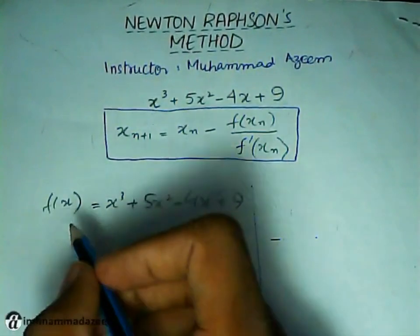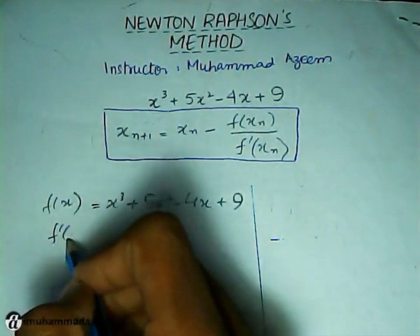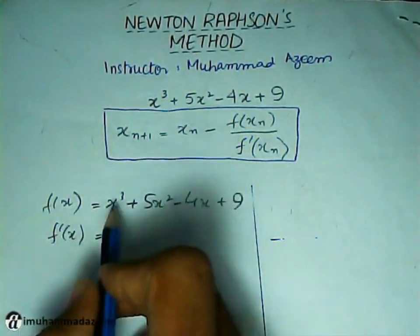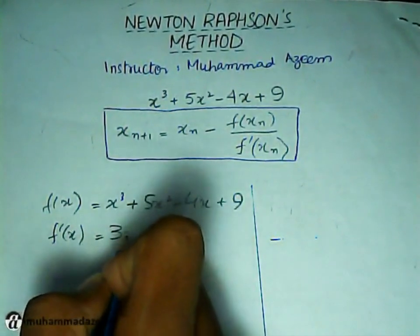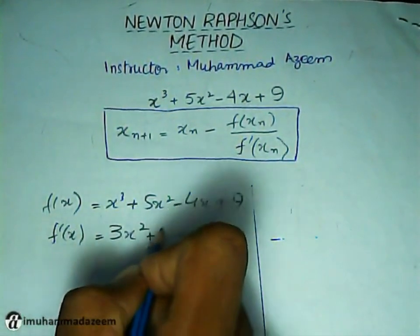f prime of x is going to be 3x² + 10x minus 4.